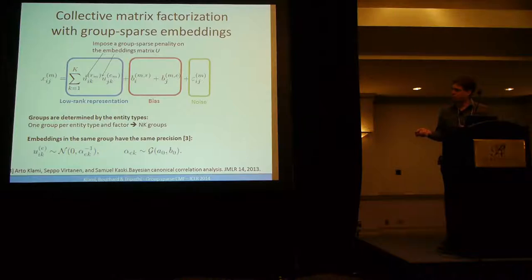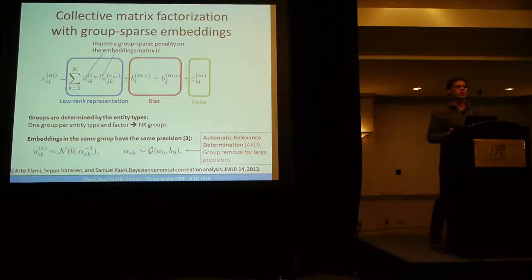So you put a prior which is normal, with mean zero, and the precision for each of the elements of the group. So here you see this is for the entity of type E. You have a variance which is depending only on the entity type. And it's specialized for each of the factors. This alpha, the precision value, follows a gamma prior with very uninformative prior. And this enables automatic relevance determination. It's an old concept in Bayesian methodology.